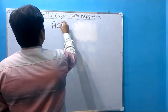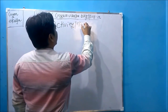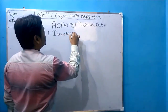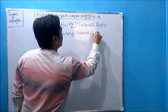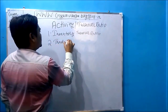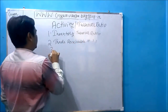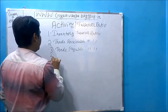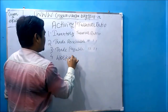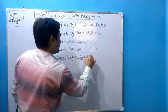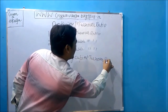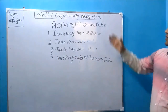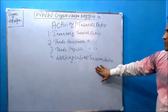In activity ratio, we will be covering four types of ratios for our syllabus. Number one is inventory turnover ratio, also called ITR. Number two is trade receivable turnover ratio. Number three is trade payable turnover ratio. Number four is working capital turnover ratio, which has been removed from the syllabus, but will be explained for convenience.